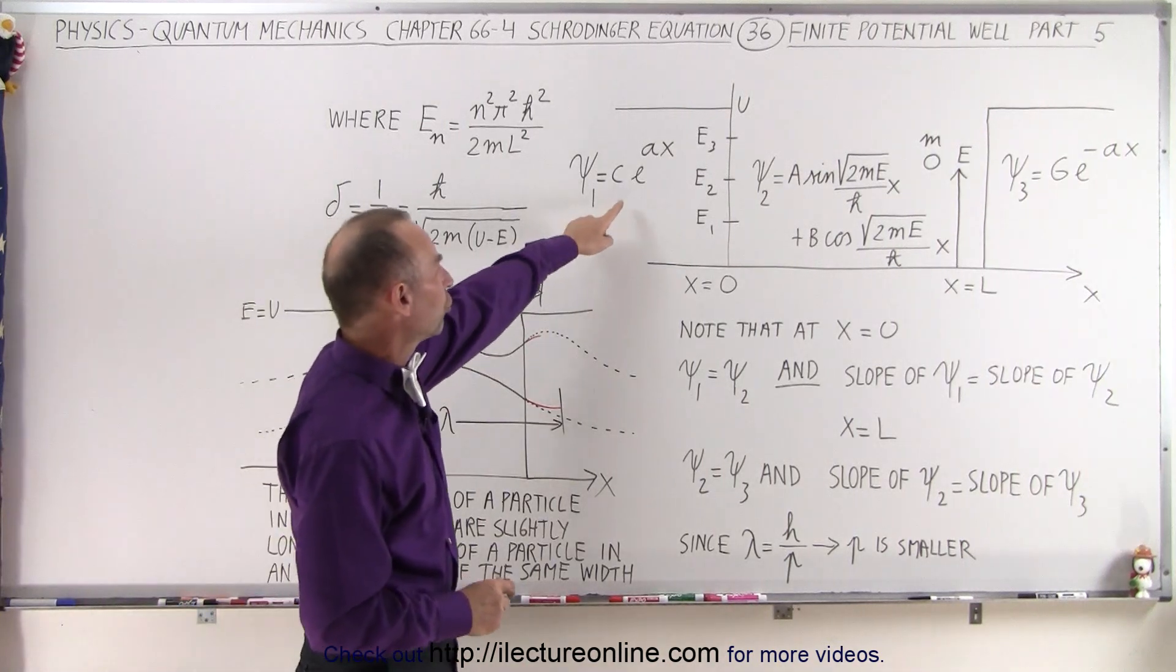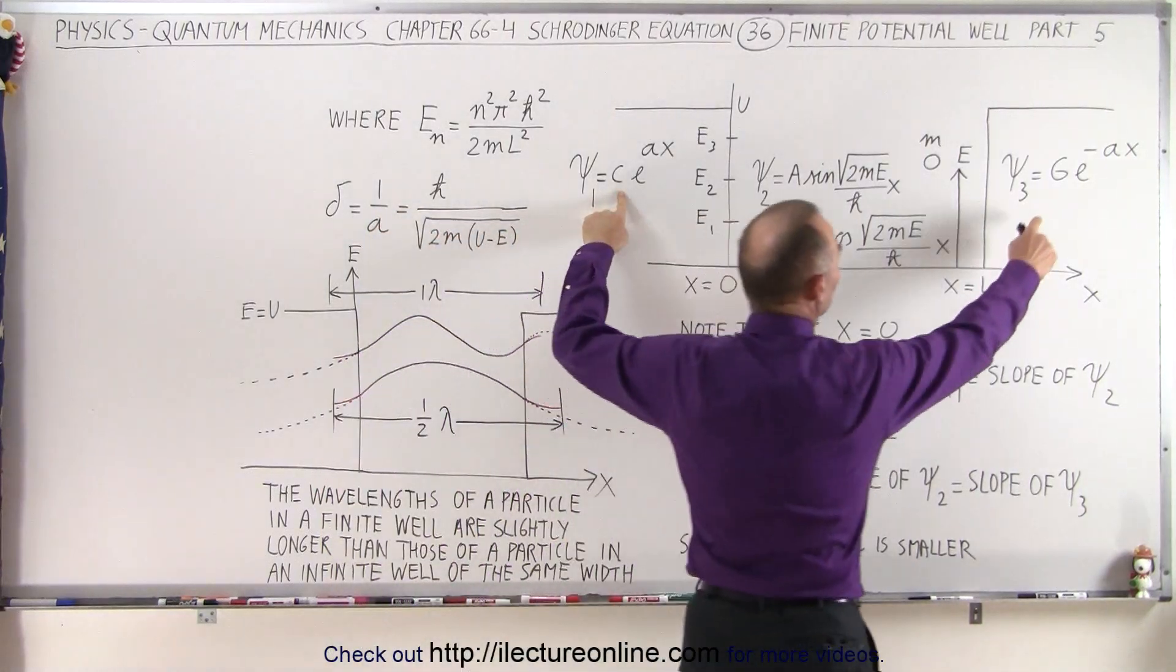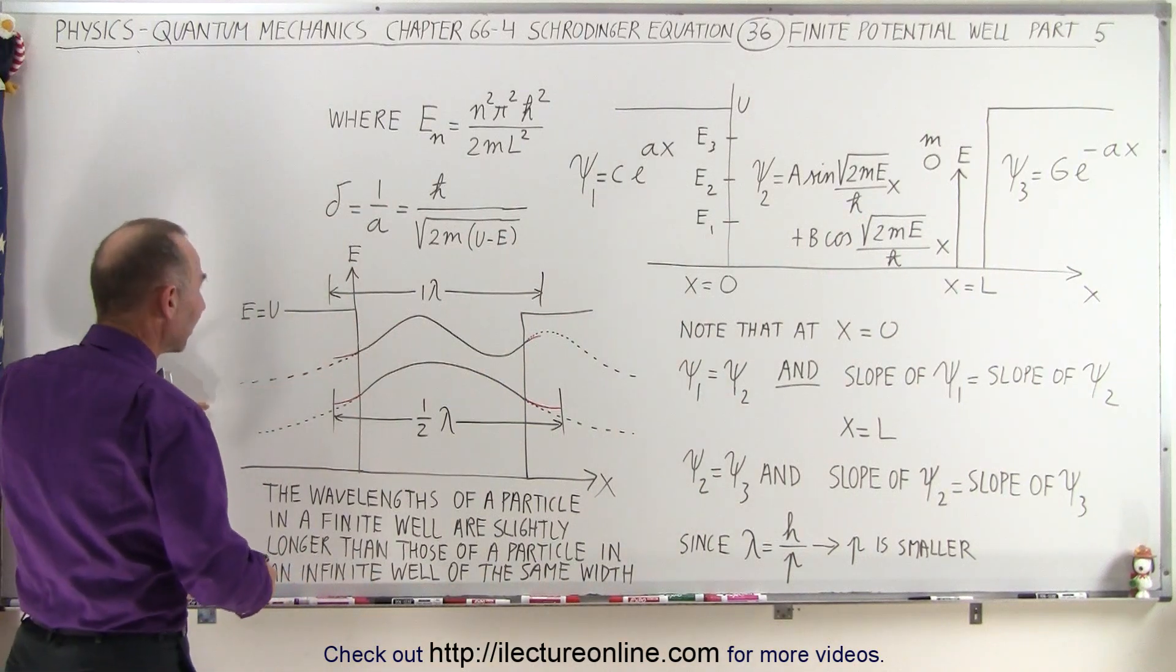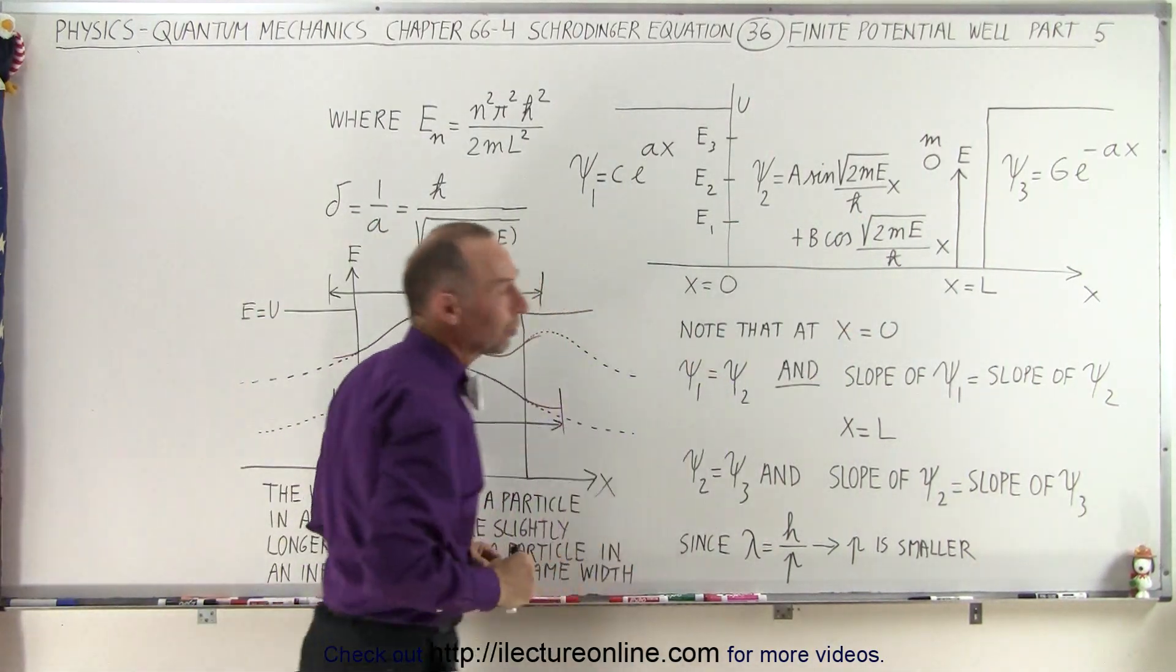But we realize that the solution to the equation for region 1 looks like this, and for region 3 looks like this. In other words, we can see that we have a decay function to the left in region 1, and a decay function to the right in region 3.